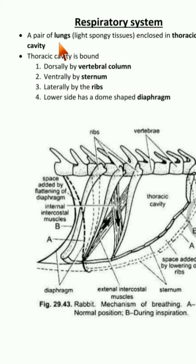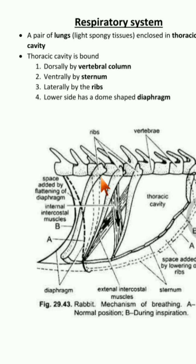Rabbit has a pair of lungs, which are spongy — they will be like a balloon. These lungs are enclosed in the thoracic cavity. The body of the rabbit is divided into head, neck, thoracic cavity, abdomen, trunk part, and tail. In the thoracic cavity you can see a pair of lungs.